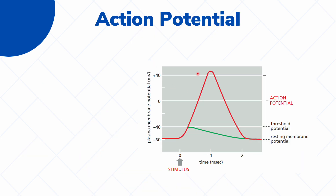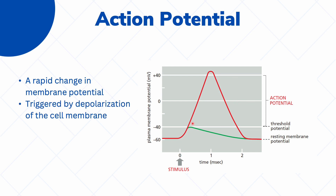In this figure we can see an example of an action potential. The action potential is a rapid change in the membrane potential of the neuron — we can see that it goes from negative to positive and then back to negative. This is a process which we call depolarization, and the action potential is triggered by depolarization of the cell membrane.